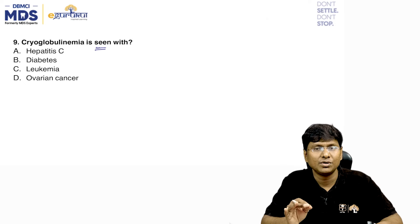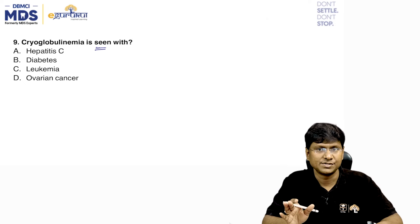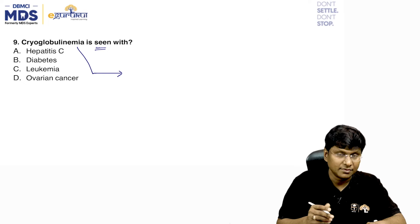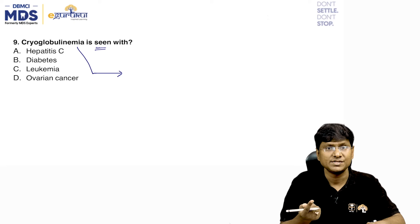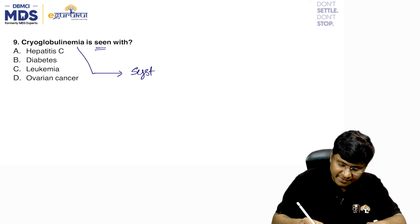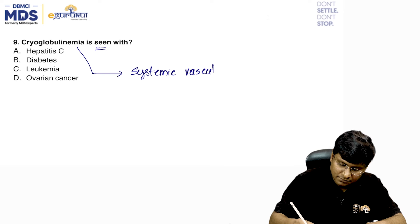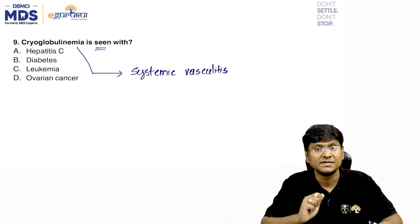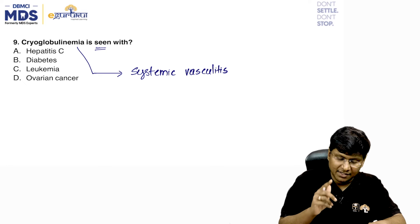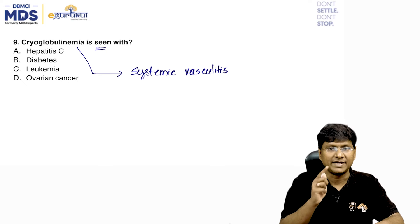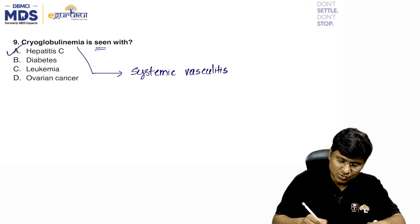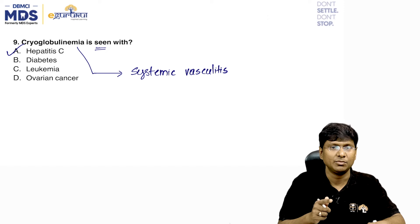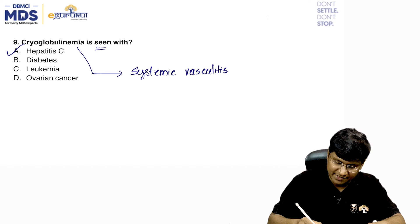Next question: cryoglobulinemia is seen with — hepatitis C, diabetes, leukemia, or ovarian cancer? Cryoglobulins are cold-precipitable monoclonal or polyclonal antibodies. In cryoglobulinemia, these antibodies lead to the development of systemic vasculitis. The organism associated with cryoglobulinemia is hepatitis C.